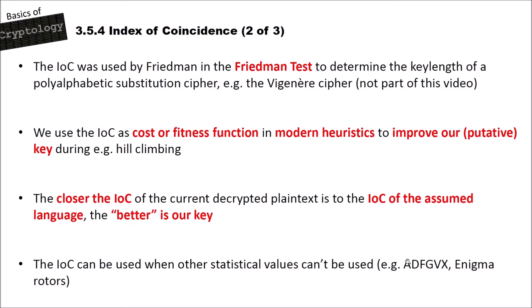Another example where we use the IOC is the Enigma machine. The Enigma machine uses a plug board, which is only a monoalphabetic substitution cipher, and rotors that create a polyalphabetic substitution cipher. We can use the index of coincidence to break the encryption performed by the rotors without analyzing the substitution done by the plug board. This allows so-called divide and conquer attacks where you first break one cipher type, then the other. The IOC is really a powerful tool.